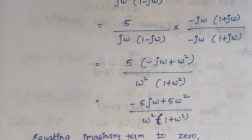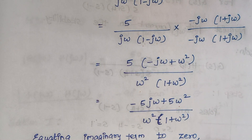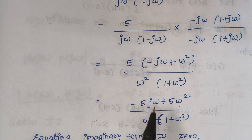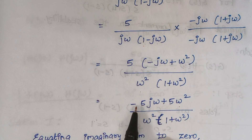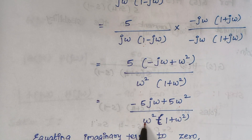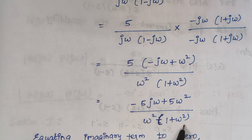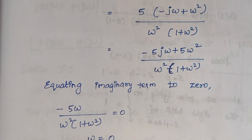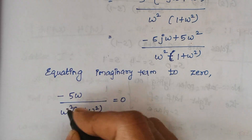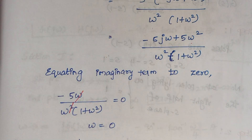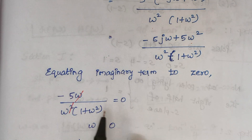Next we equate the imaginary term to 0. The denominator omega squared times (1 plus omega squared) is common to both real and imaginary parts. The imaginary term is minus 5 omega divided by omega squared times (1 plus omega squared). Setting this to 0, omega cancels, and moving terms to the right side gives omega = 0.